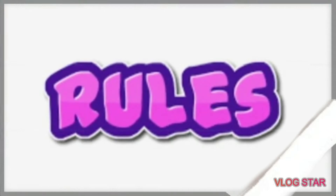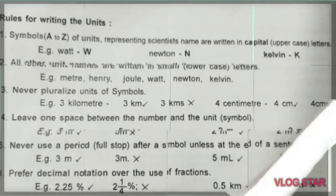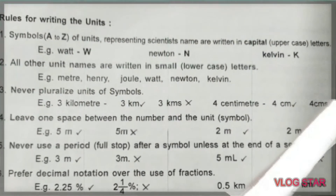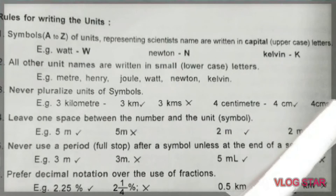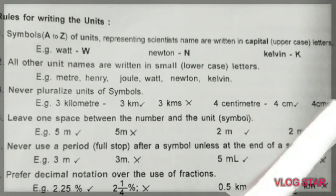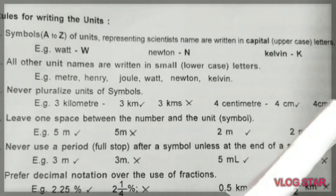Rules for writing the units: We should write scientists' names in capitals. We should write other unit names in lowercase. We should never pluralize the symbols. We should leave a space in between. We should not use punctuations. We should prefer decimal notations.